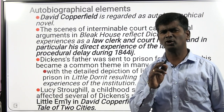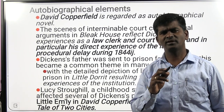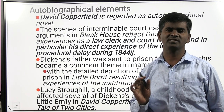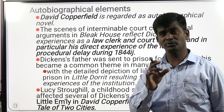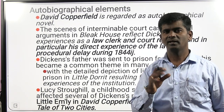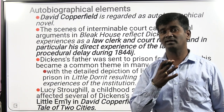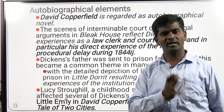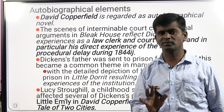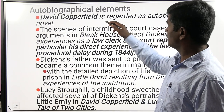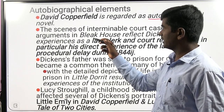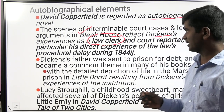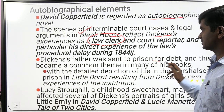Autobiographical elements are very important. David Copperfield, written in 1850, is considered the autobiographical novel by Charles Dickens. He also uses autobiographical elements in other novels — going to prison, his time as a law clerk, working conditions — but only David Copperfield (1850) is fully autobiographical. Some arguments in Bleak House also reflect Dickens's experience as a law clerk. His father was sent to prison for debt, and this becomes a feature in most of the novels.